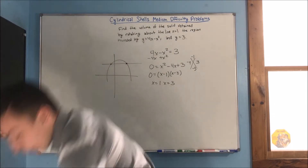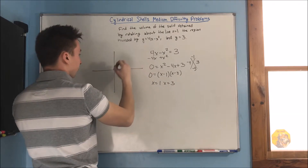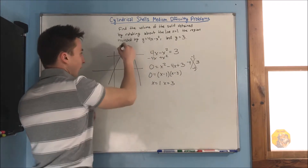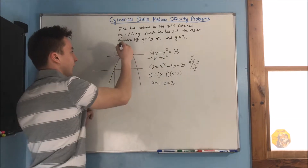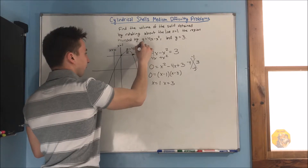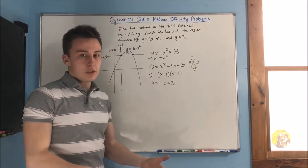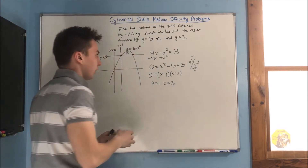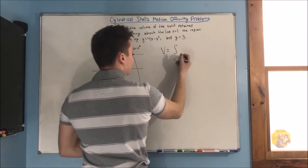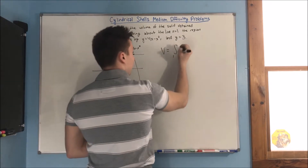We can redraw this graph. We know the parabola intersects y equals 3 at x equals 1 and x equals 3, our region is right there, and our line of rotation is at x equals 1. So that's x equals 1, x equals 0, y equals 4x minus x squared, and y equals 3. Now that we've graphed it and found our region, we can do cylindrical shells — and this is probably going to be a little bit easier than the last problem.